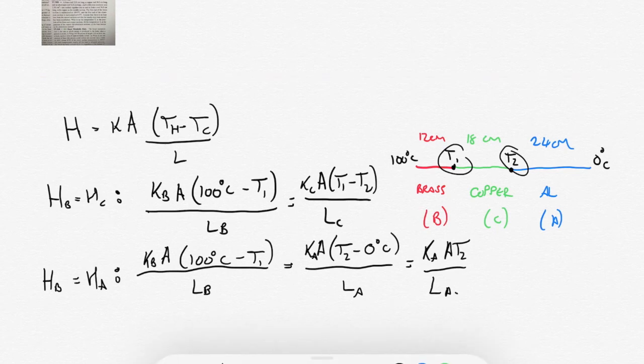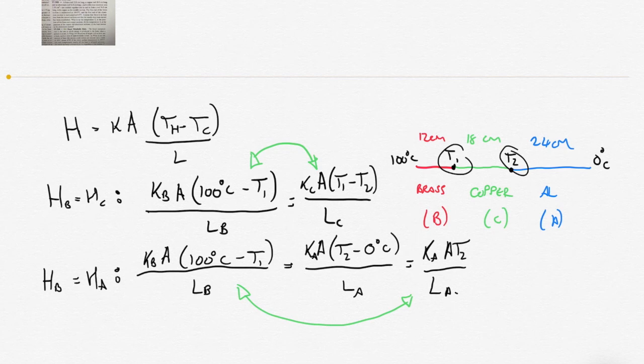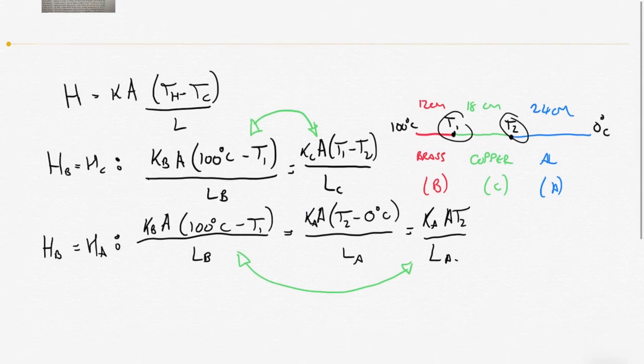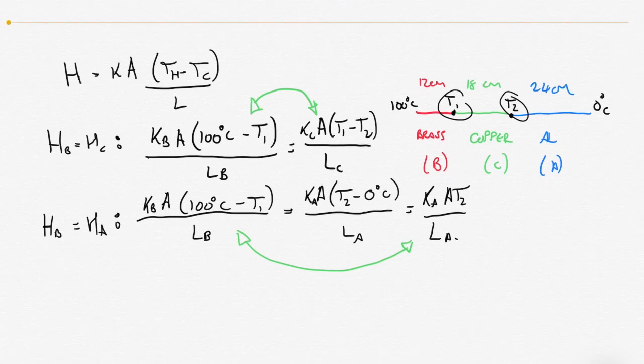Now we've got two equations and two unknowns. We've equated what's going on in the brass, and we've equated what's going on in the copper and the aluminum. We can use simultaneous equations, substituting one of these equations into the other. I'm not going to go through that in detail because there's actually quite a lot of steps. We can basically cancel out all the A's first of all, the area is common to all of them. Then we can use simultaneous equations to solve for T1 and T2.